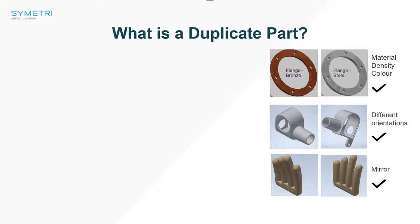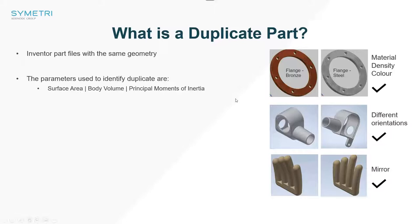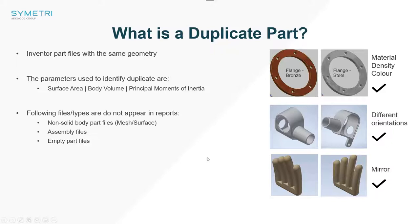If we look at Vault's Duplicate Search tool and understand what Vault classifies as a duplicate, it looks at certain things: material density, different orientations, and mirrors. So Inventor parts with the same geometry — and these are defined in the code — it actually looks at the surface area, the body volume, and the principal moments of inertia. That's why components in a different orientation, with a different material or color, or even a mirror will get picked up. What it doesn't do — important to note — is it doesn't pick up non-solid bodies, so meshes and surfaces, and it doesn't work on assembly files or empty part files at this stage.